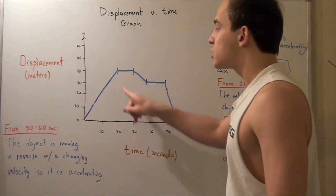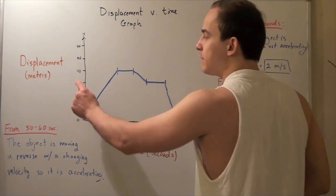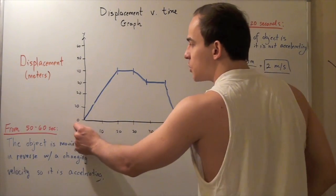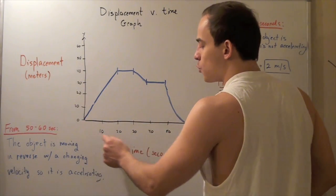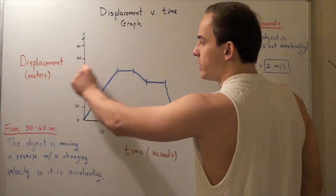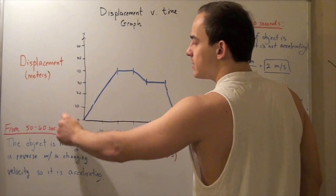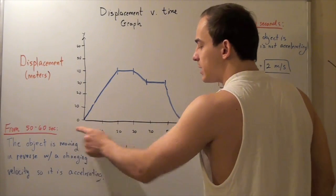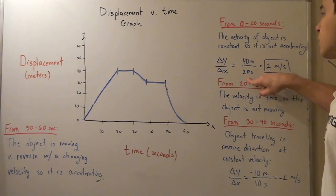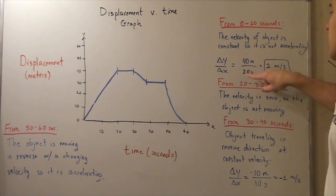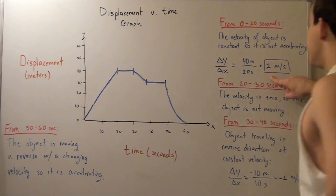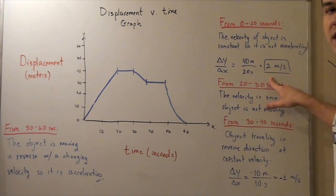If we try to find the slope of this graph, we do it by finding change in y divided by change in x. We go from zero to forty meters, and from zero to twenty seconds. So to find the slope, we divide forty meters by twenty seconds, which gives us a velocity of two meters per second in the positive direction.